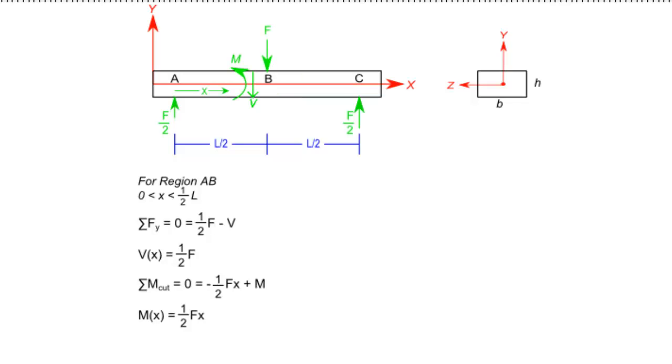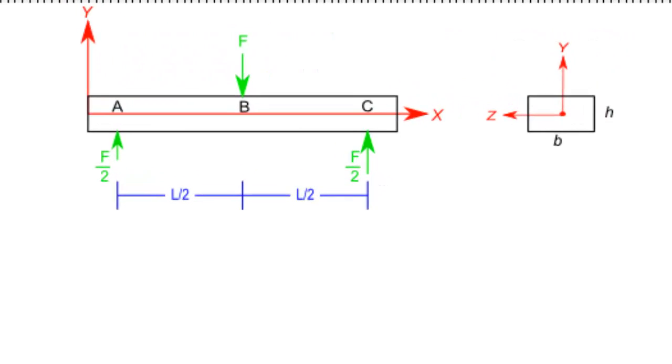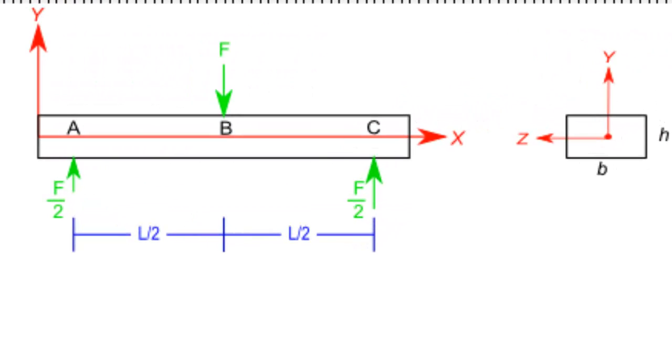Next, we can carry out the same analysis, but this time we'll take a look at region BC. In this case, I place a cut between points B and C that is also located a distance X from point A. And once again, we know that on the face of this cut, we require a potential shear force and moment in order to keep the beam in static equilibrium.